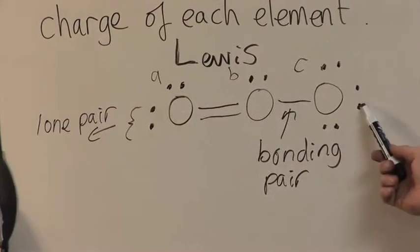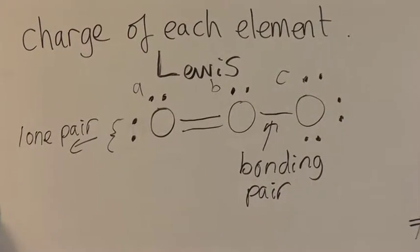And looking here, we have two electrons, two electrons, two electrons, six, plus an extra one is seven.